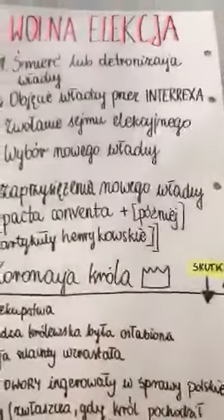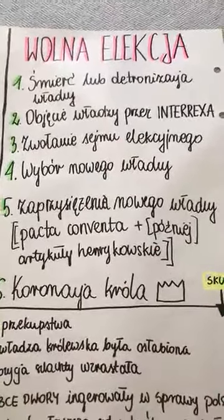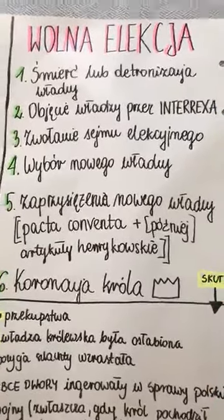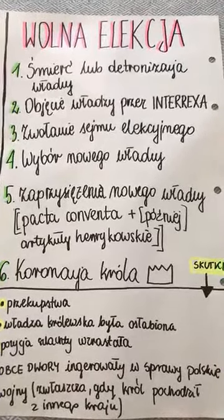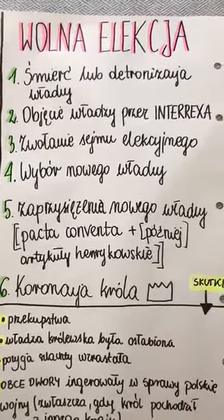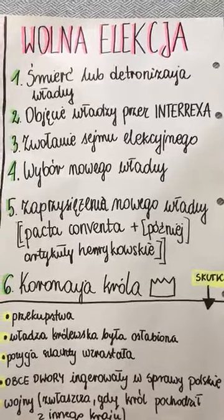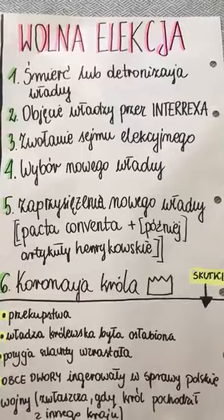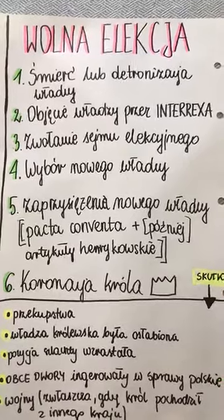Przejdę do rozpiski wolnej elekcji – etapy: gdy umiera lub detronizuje się król, władzę w państwie przejmuje tak zwany interrex, czyli po łacinie między-król. Ktoś, kto będzie chwilowo podejmował decyzje w państwie. Tym interrexem zazwyczaj w Polsce będzie prymas polski. Prymas sprawuje tę władzę i zwołuje sejm elekcyjny. Na tym sejmie elekcyjnym musi się zebrać szlachta z całego kraju, co już tylko zazwyczaj trwa parę miesięcy, zanim wszystkie ziemie się dowiedzą i przyjadą – bo nie było samochodów, wszyscy konno jeździli.